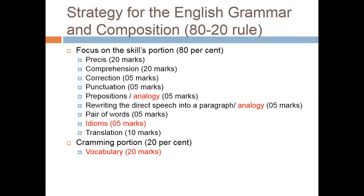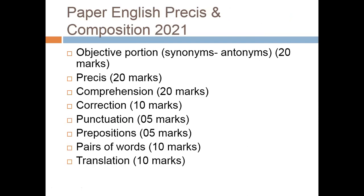Many students waste too much time on vocabulary, idioms, and analogy while neglecting their skill portion — this is heavy gambling and they often suffer losses. Looking at the 2021 paper: objective portion was 20 marks with synonyms and antonyms; precis 20 marks; comprehension 20 marks; correction 10 marks; punctuation 5 marks; preposition again 5 marks; pair of words 10 marks; translation 10 marks. This was the pattern. The conclusion is: focus primarily on your language skill — precis, comprehension, correction, punctuation, preposition — and give only 20-30% attention to the cramming portion of vocabulary, idioms, and analogy.